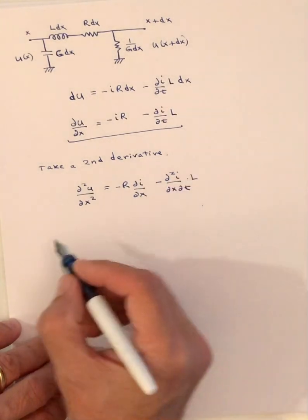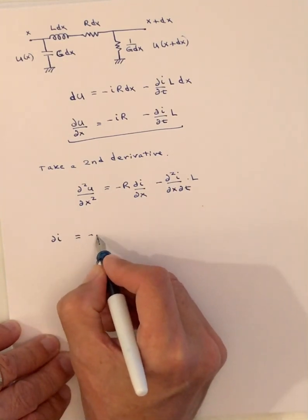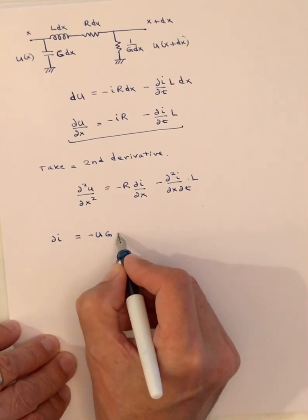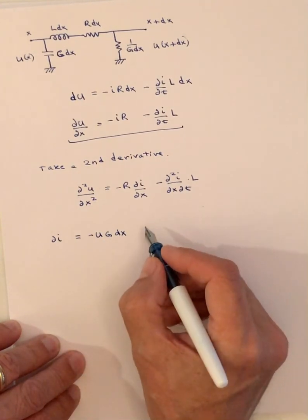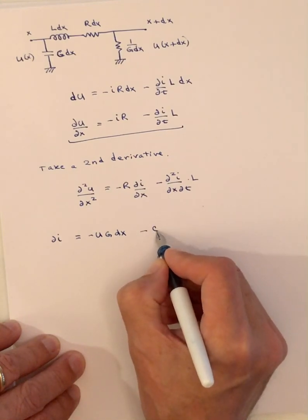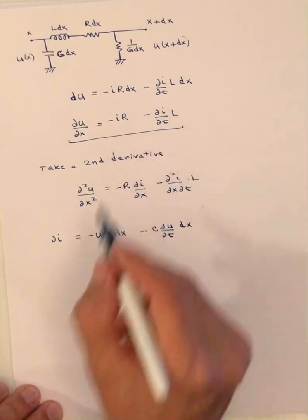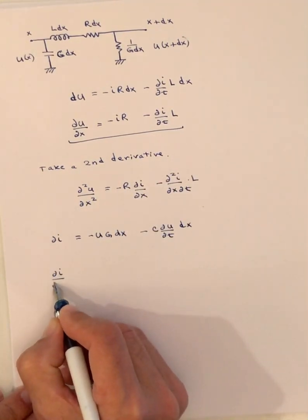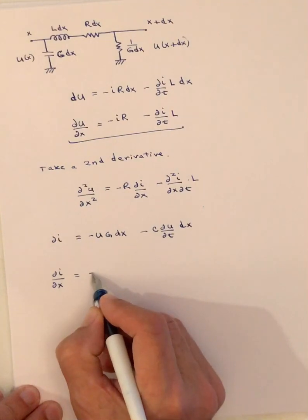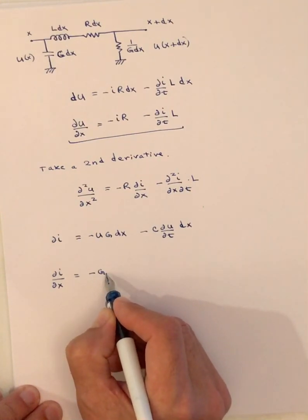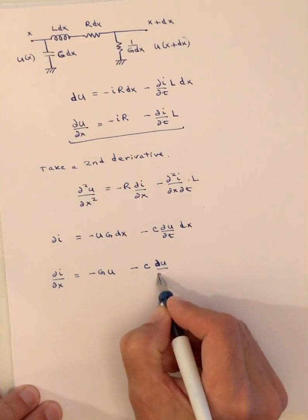We go ahead and derive a similar equation for the current. DI equals minus U·G·DX. Note that G is the inverse of the resistivity, so we can add the conductance term and the capacitance term: minus C·(DU/Dt)·DX. Dividing by DX to get DI/DX — since I is a function of X and T — we end up with minus G·U minus C·(DU/Dt).